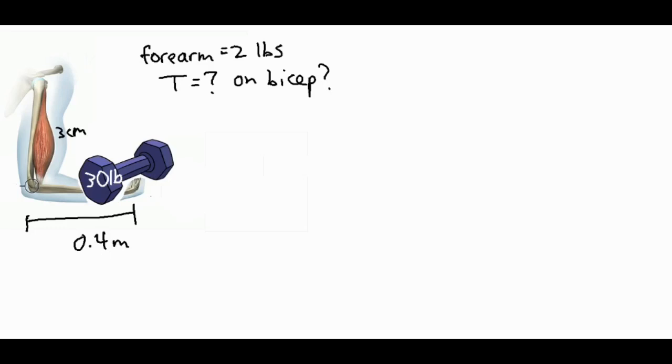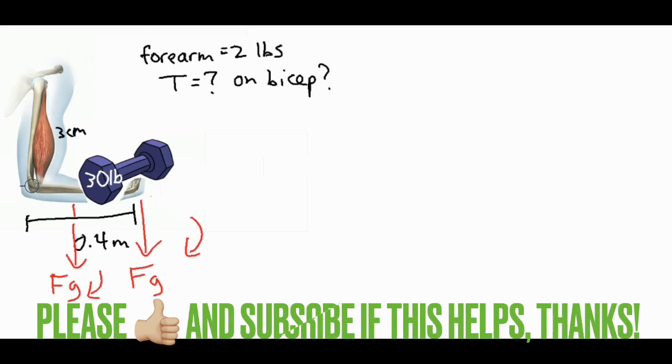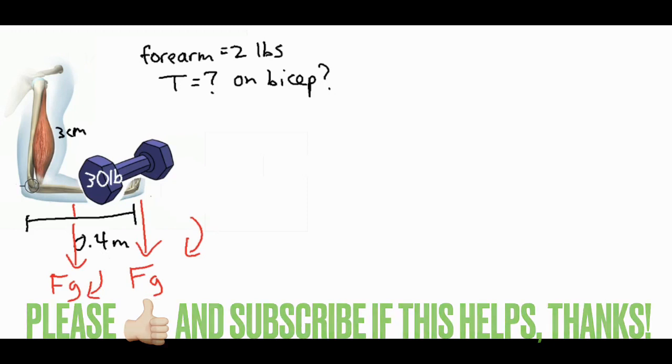Now if we take a look at this diagram we have a few different things going on. We obviously have a 30-pound weight providing some torque. Because the weight is pulling down with its weight, with a certain force of gravity, it's going to try to rotate the arm in the clockwise direction. And then the actual weight of the arm as well, because it has its own force of gravity, is also going to be providing some torque in the clockwise direction. So both of those are going to be working together to provide torque in the negative direction.